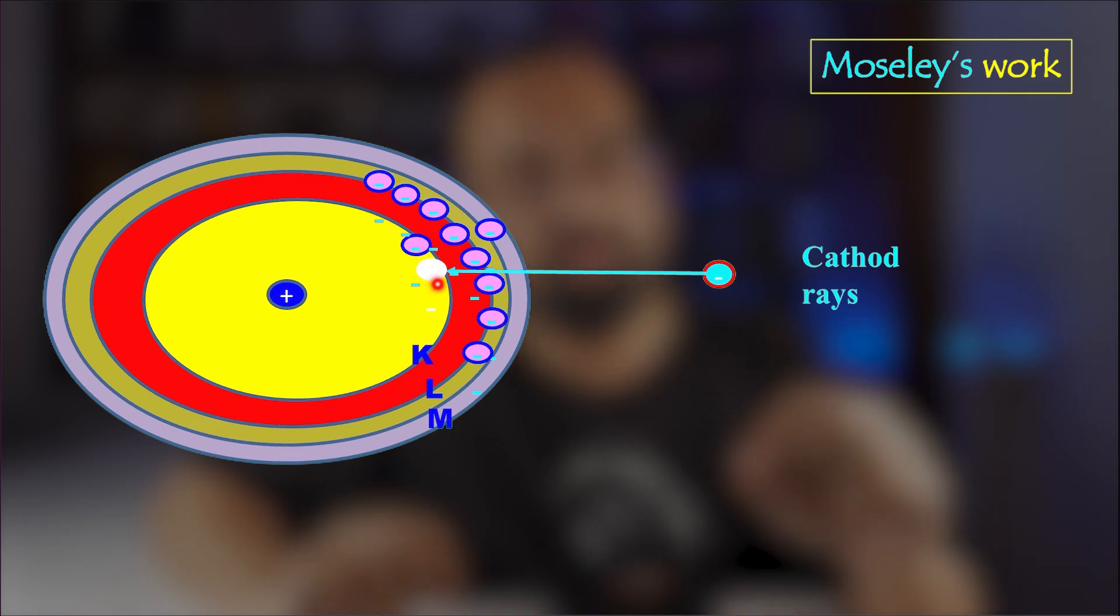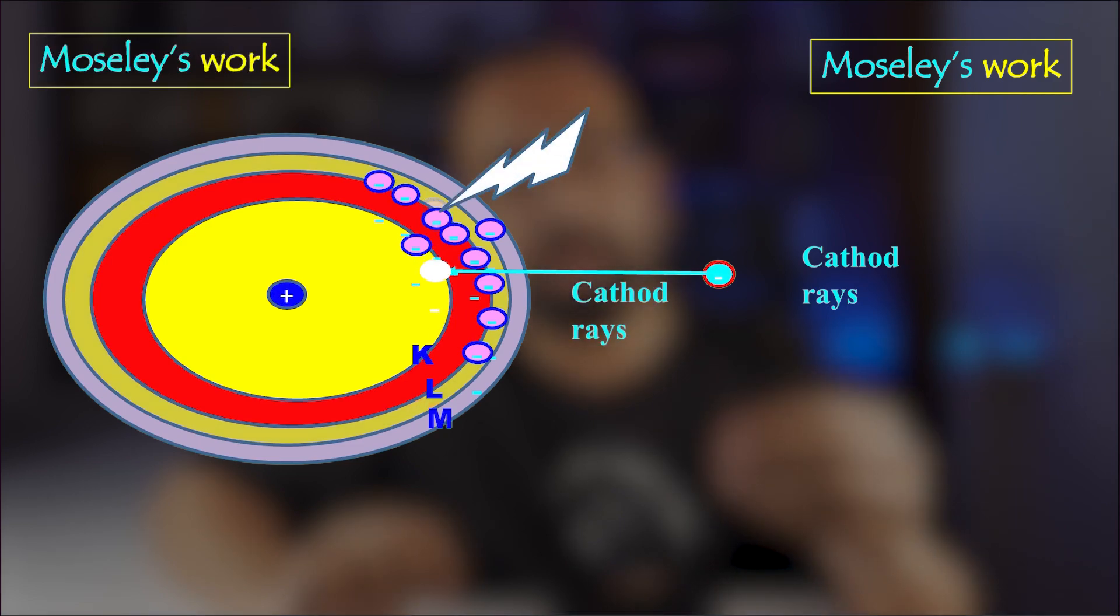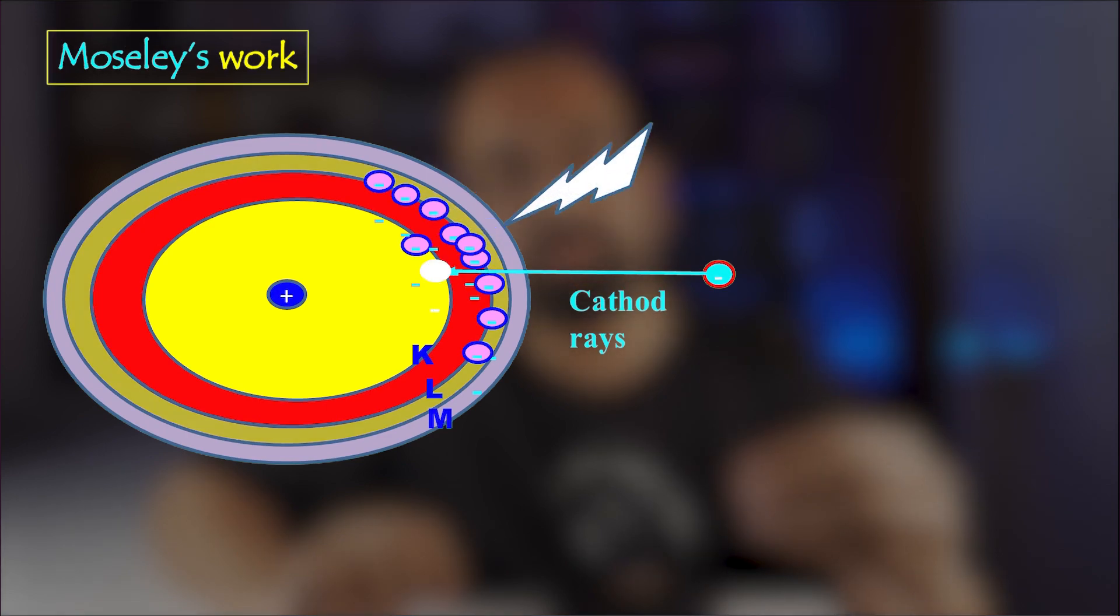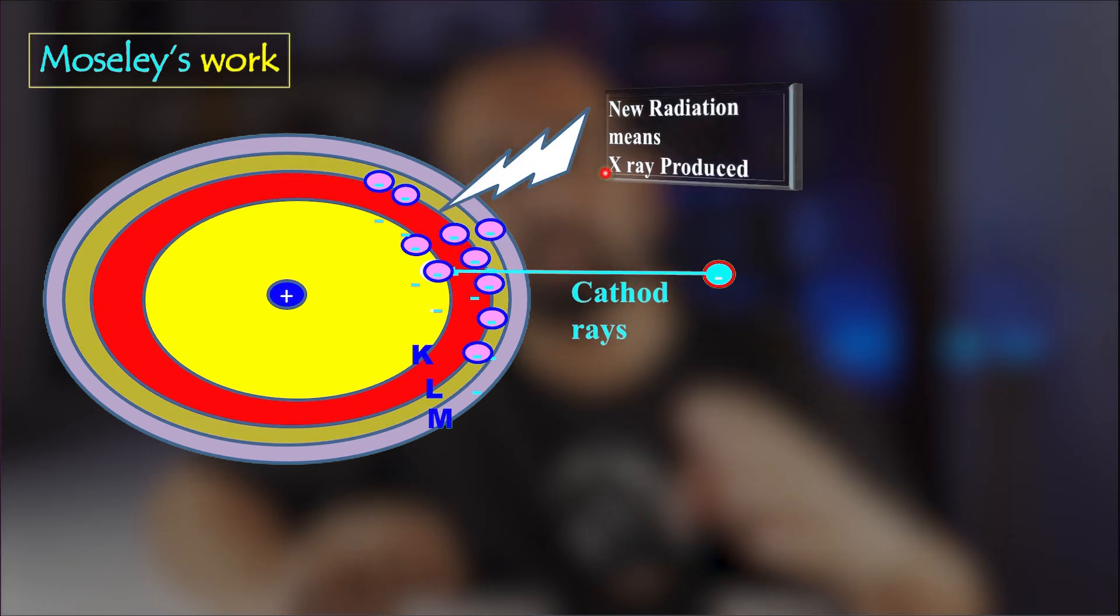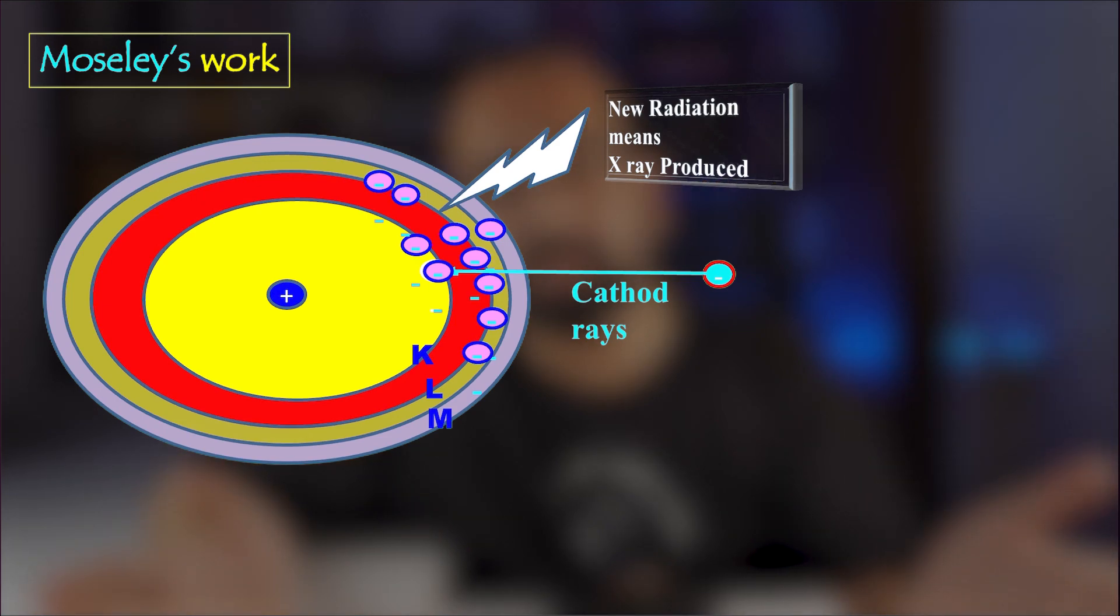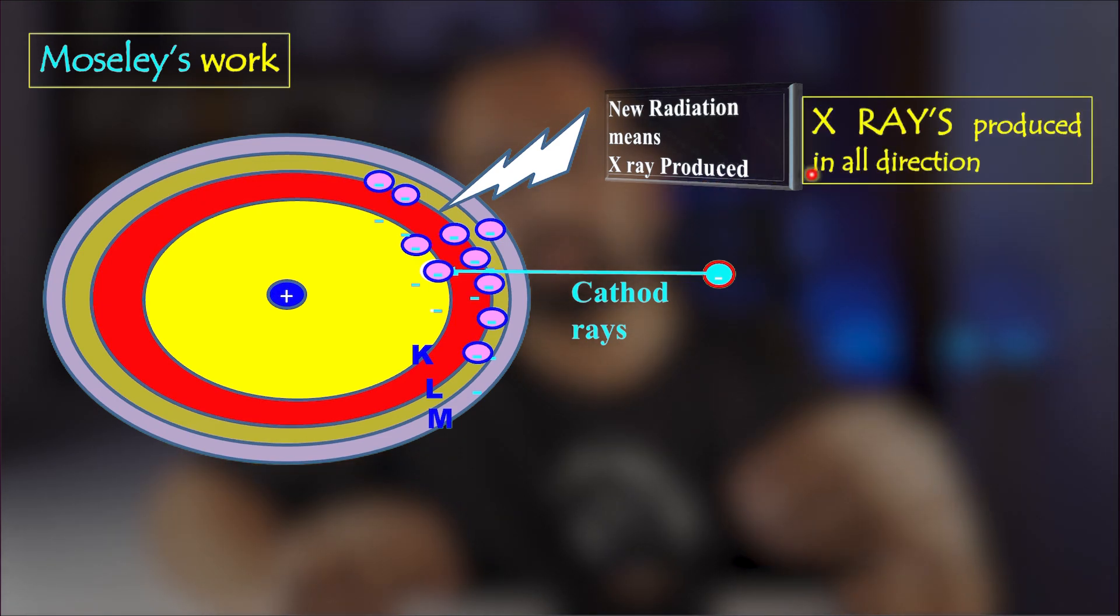In order to fill that, the electron will fall either from L shell to the K shell or from the M shell to the K shell. Then those electrons release energy and that released energy is basically in the form of electromagnetic radiations which are called as the X-rays which are produced in all directions.